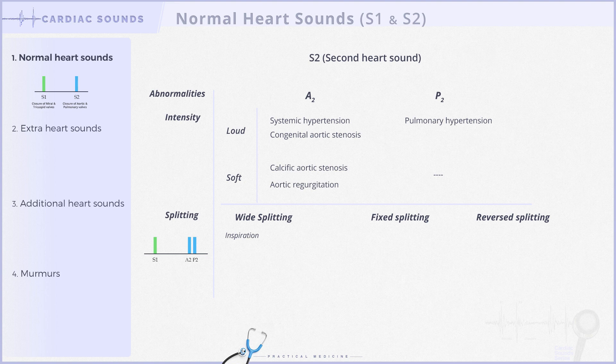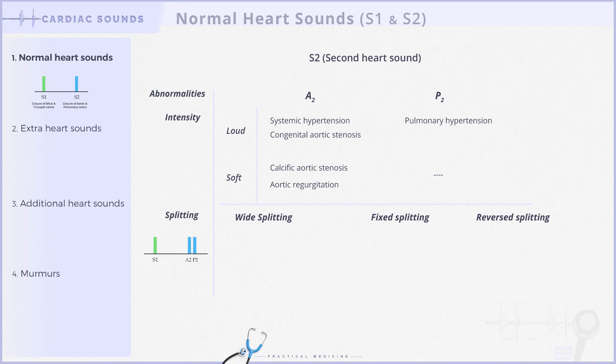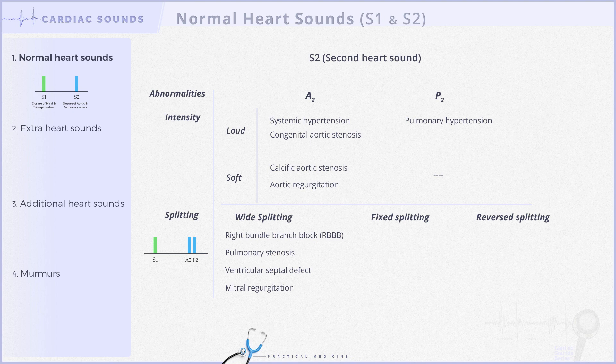We've previously discussed how physiological splitting widens during inspiration. Additionally, conditions that delay the emptying of the right ventricle or prompt premature closure of the aortic valve can augment S2 splitting. Consequently, wide physiological splitting is observed in conditions such as right bundle branch block, pulmonary stenosis, ventricular septal defect, and mitral regurgitation. Notably, the first three conditions delay right ventricular emptying, whereas mitral regurgitation leads to early closure of the aortic valve.